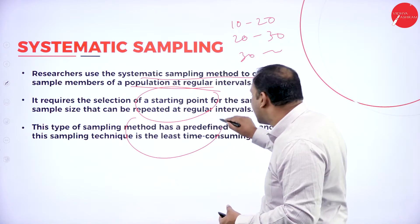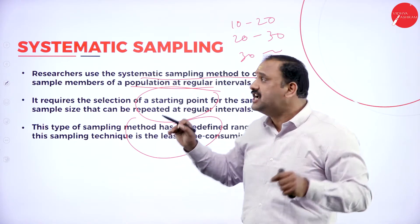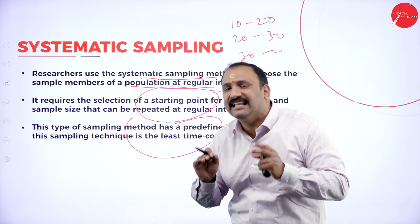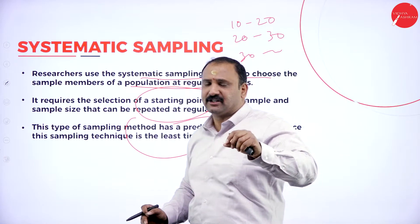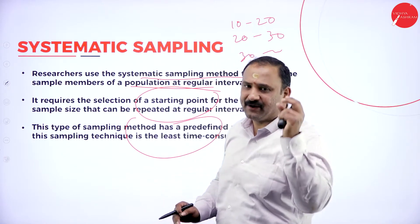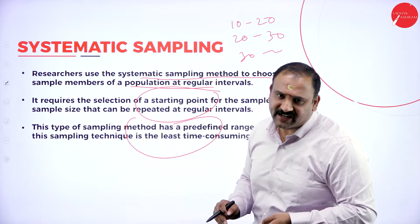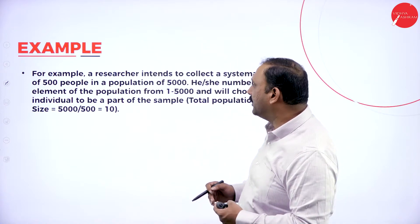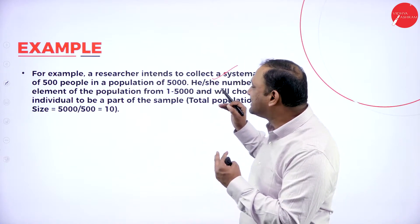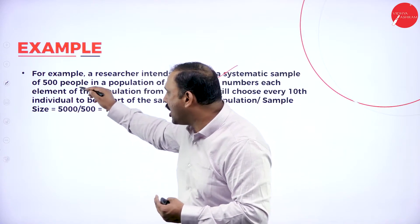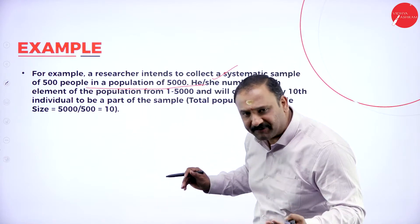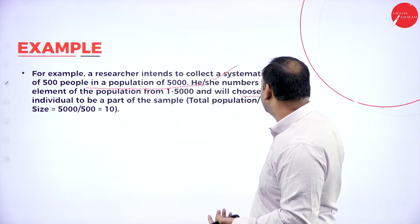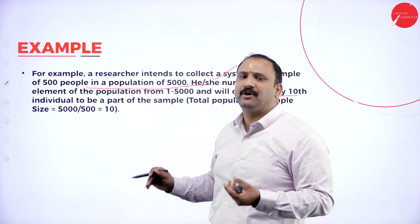This type of sampling has a predefined range — here the predefined range is 10 — and it is the least time-consuming method because it is very simple and effective. For example, a researcher intends to collect a systematic sample of 500 people from a population of 5,000, numbering the elements 1 to 5,000 and choosing every 10th individual to be part of the sample.